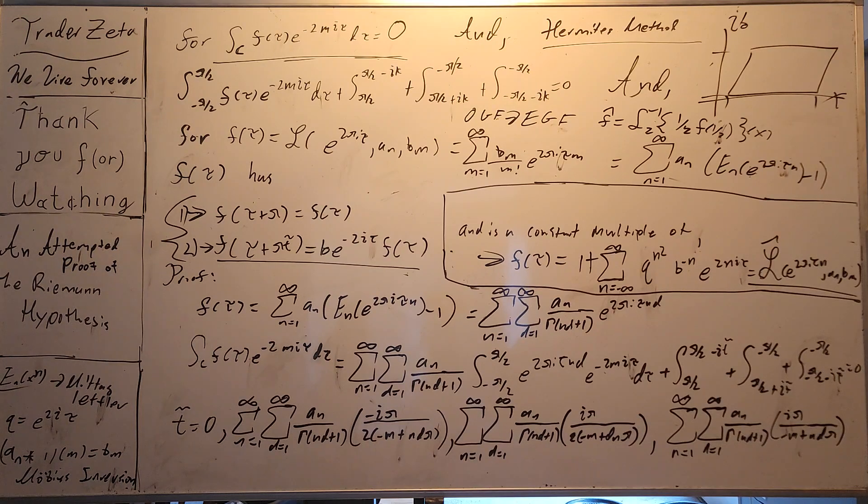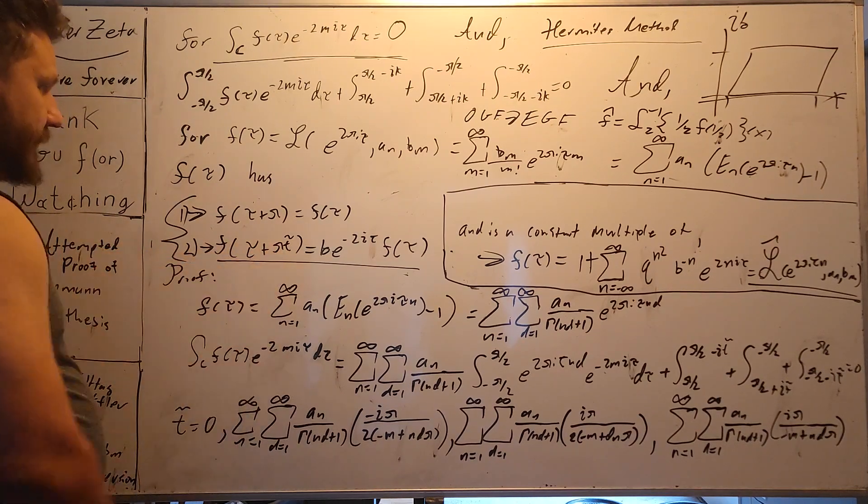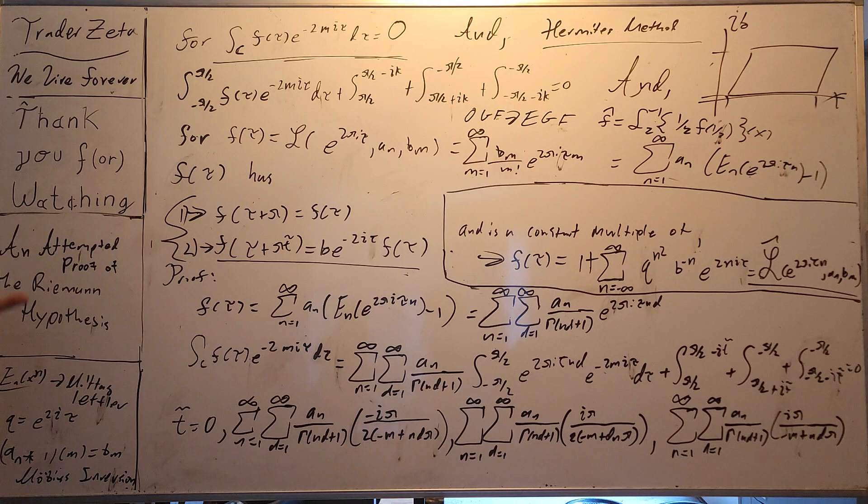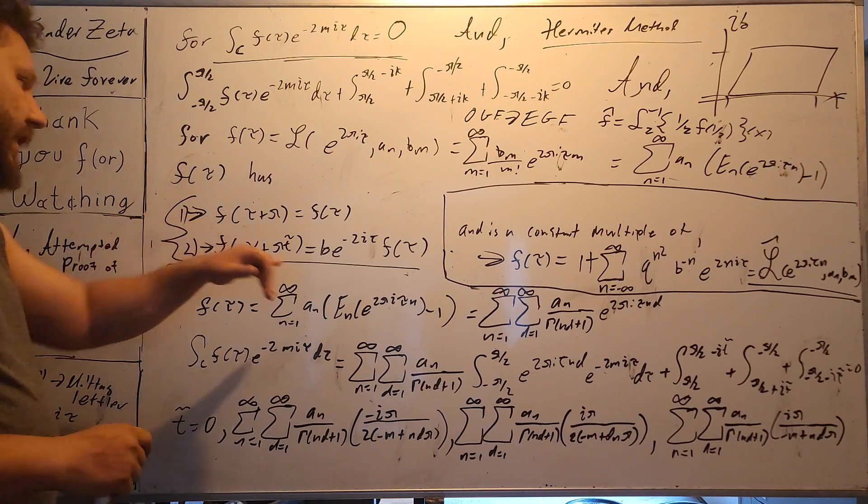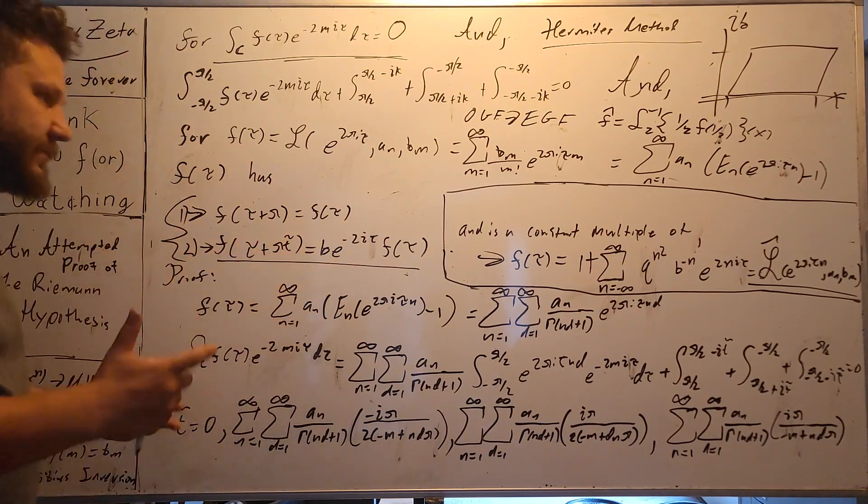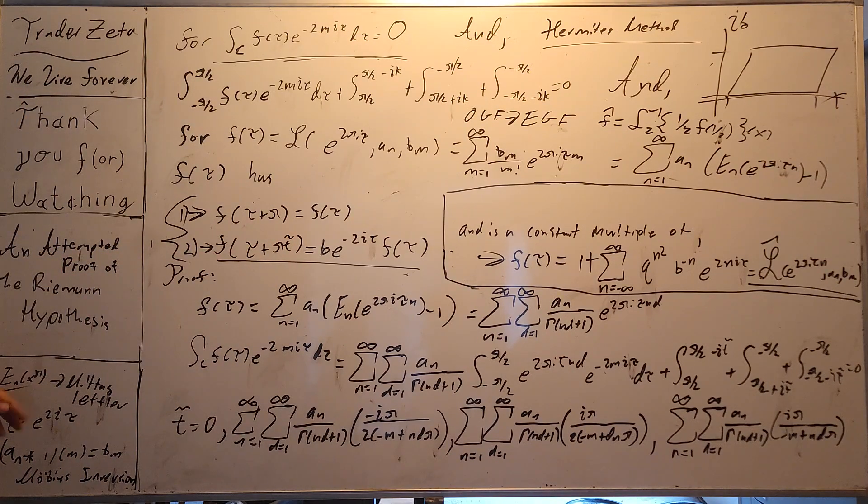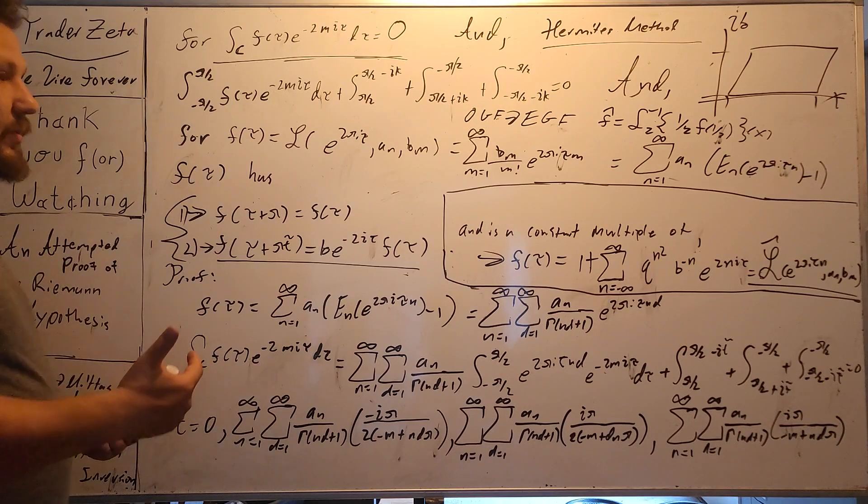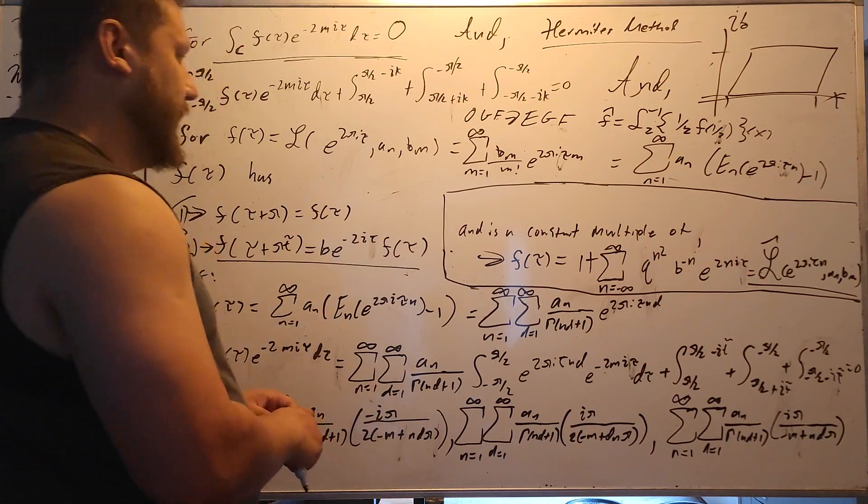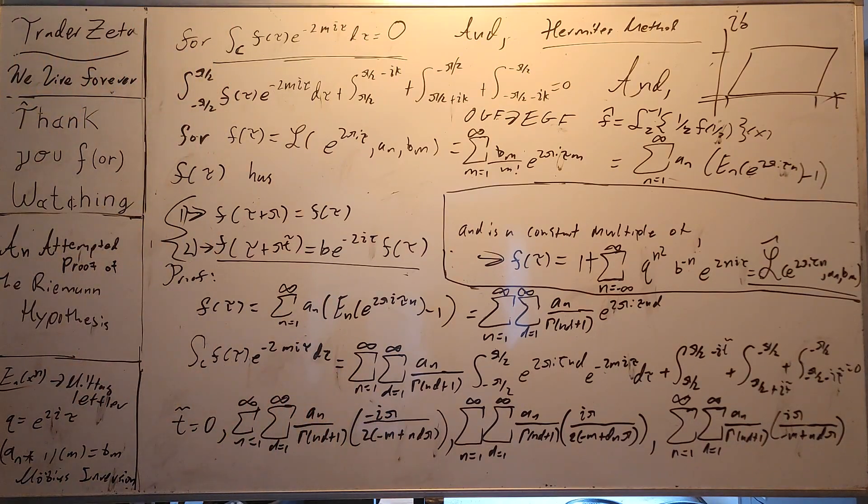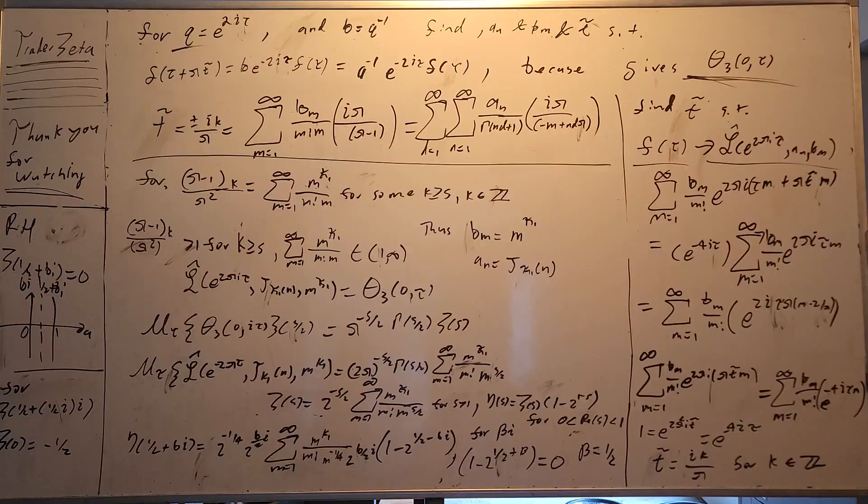Now, you might say, well, you've not explained b. What is going to be b? When we set b equal to q to the negative one, it's actually going to be the third theta function. And doing so is going to give us really deep insights into the Riemann hypothesis. Let me flip the board, and we're going to jump right into it. So, for q, as I said, equals e to the 2 pi i tau, and b equals q to the minus one,